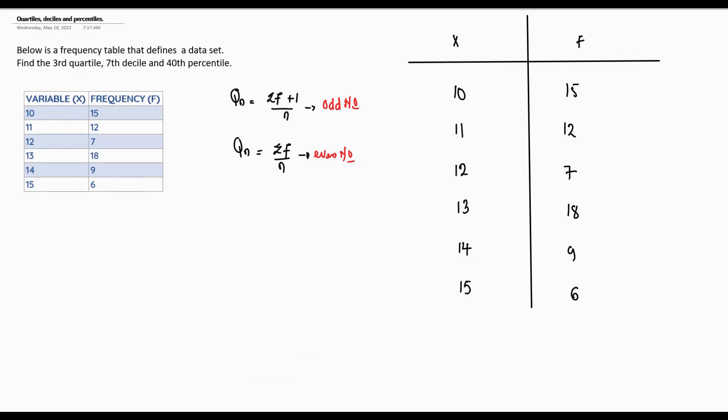15 plus 12 is 27. 27 plus 7 is 34. 34 plus 18 is 52. 52 plus 9 is 61. 61 plus 6 is 67. By summing the frequency, we can see that we have a total of 67 data points — that is, summation f equals 67.